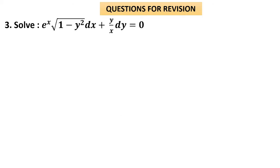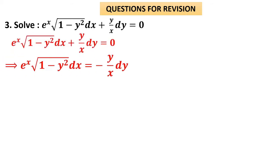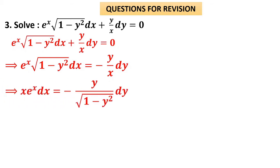Let us move on to question number 3: e^x·√(1−y²)dx + (y/x)dy = 0. Push the (y/x)dy term to the right-hand side. We keep dy on the right and dx on the left. Cross-multiplying x gives x·e^x·dx = −y/√(1−y²)·dy.